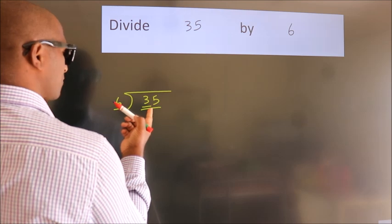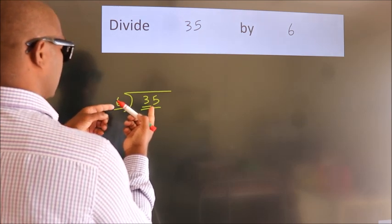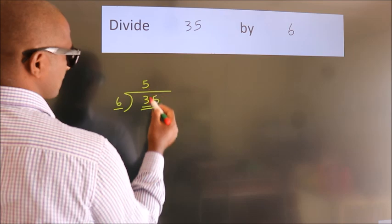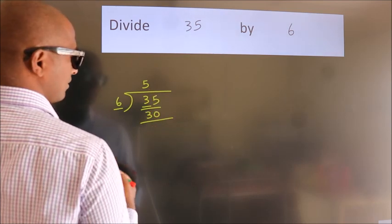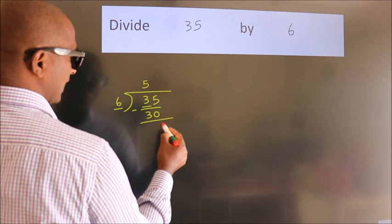A number close to 35 in the 6 table is 6 fives, 30. Now we should subtract. We get 5.